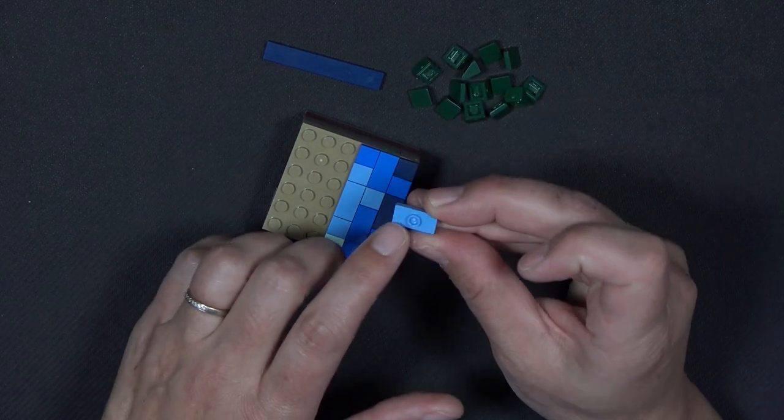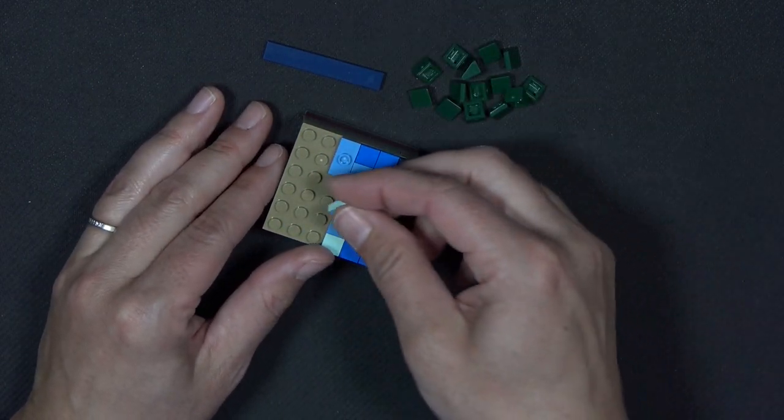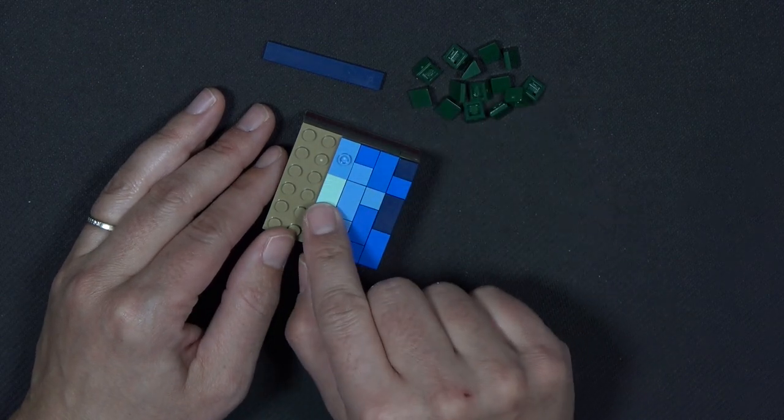This is a jumper, it's a 1x2, and it's got the stud. That one's going to sit here. And then a 1x2 tile in light aqua.